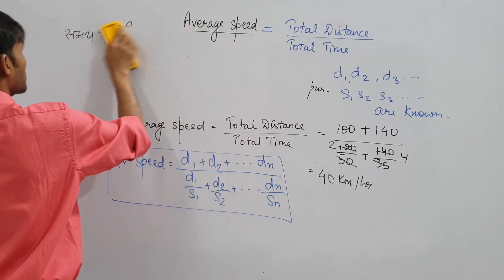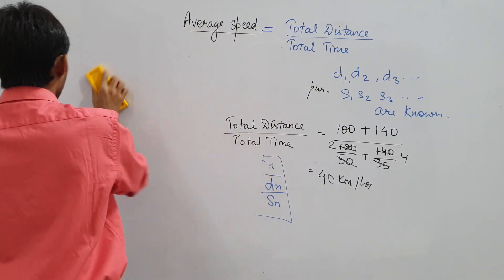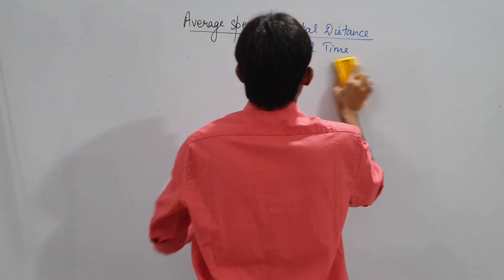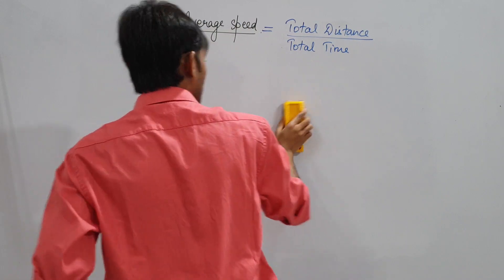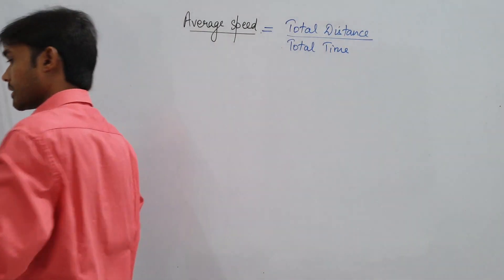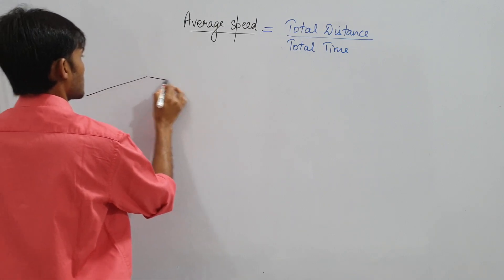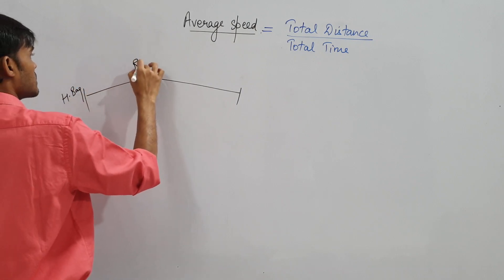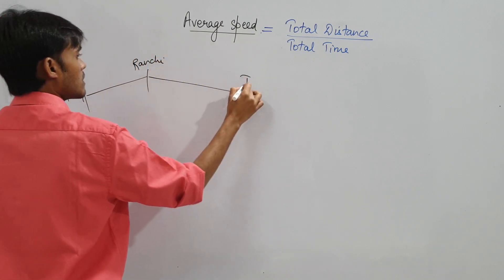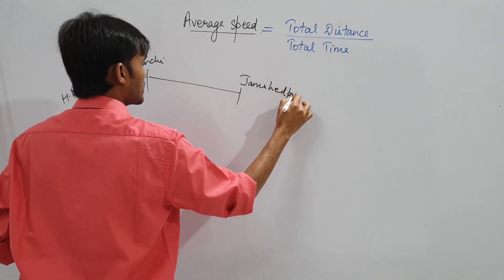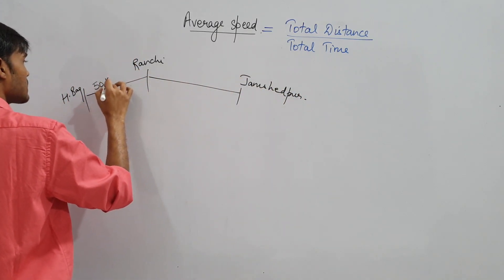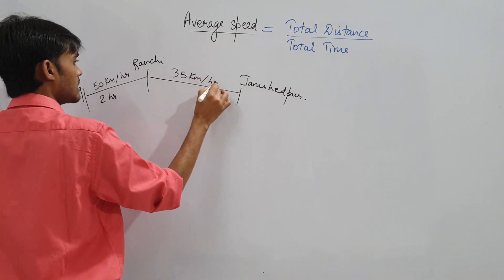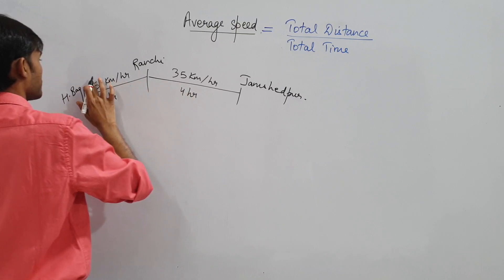Now for the third format. This time the question says: traveled at 50 km per hour for 2 hours, and at 35 km per hour for 4 hours. Find average speed. We can see the denominator — total time is clearly visible — but unfortunately distance is not mentioned directly.